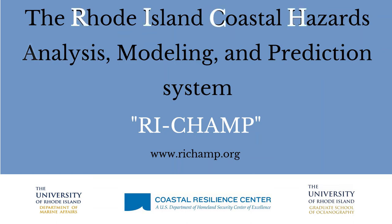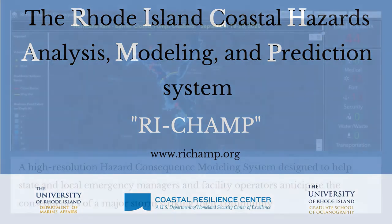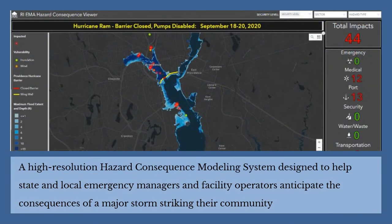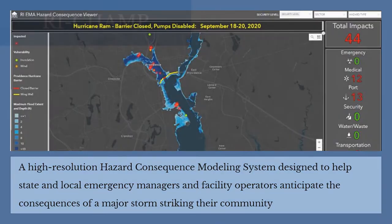The Rhode Island Coastal Hazards Analysis, Modeling, and Prediction System, or RIECHAMP, is a high-resolution hazard consequence modeling system designed to help state and local emergency managers and facility operators anticipate the consequences of a major storm striking their community.